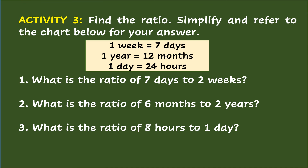Activity 3. Find the ratio, simplify, and refer to the chart below for your answer. Take note that 1 week equals 7 days, 1 year equals 12 months, and 1 day equals 24 hours. Number 1: What is the ratio of 7 days to 2 weeks? You need to get the equivalent of weeks to days. Changing 2 weeks gives an equivalent of 14 days. So the ratio of 7 days to 2 weeks is 7 is to 14, or simplifying it is 1 is to 2.